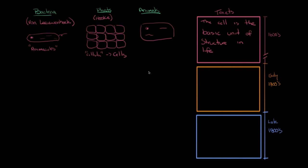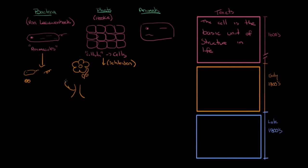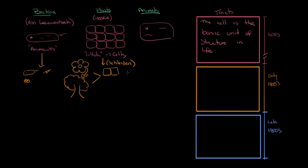Over the ensuing years, scientists continued looking at all sorts of things under the microscope. Regarding bacteria, they discovered there were all sorts — some rod-shaped, some spiral-shaped, some more spherical — but regardless of shape, they all had the same cell as their basic unit of structure. Moving on to plants, in the 1830s a German botanist by the name of Matthias Schleiden looked at all sorts of plants under a microscope. He realized it didn't matter whether he was looking at a specific flower or a maple tree — all the different plants had the same microscopic structure of cells that Robert Hooke had described.